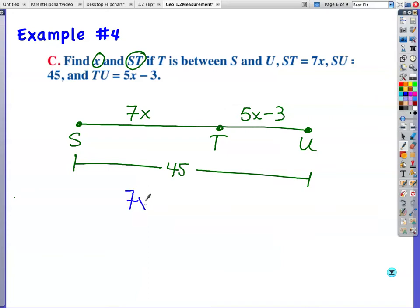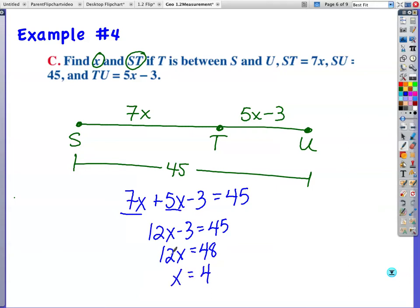I'm going to say 7X plus 5X minus 3 is equal to 45. And, now, combine like terms. Solve by adding, I'm not going to write down, add 3 to both sides. But, that's what I'm doing there. I'm adding 3. And, then, I'm going to divide both sides by 12. 48 divided by 12 is 4. 12 divided by 12 is 1. So, now, I have X is equal to 4.